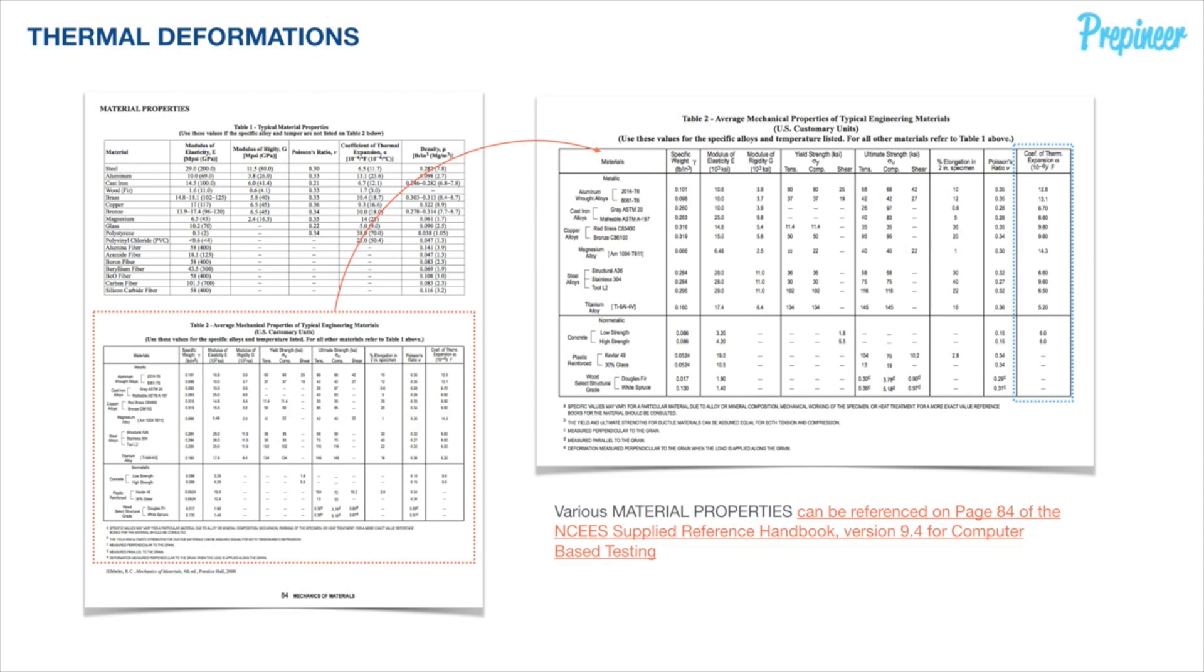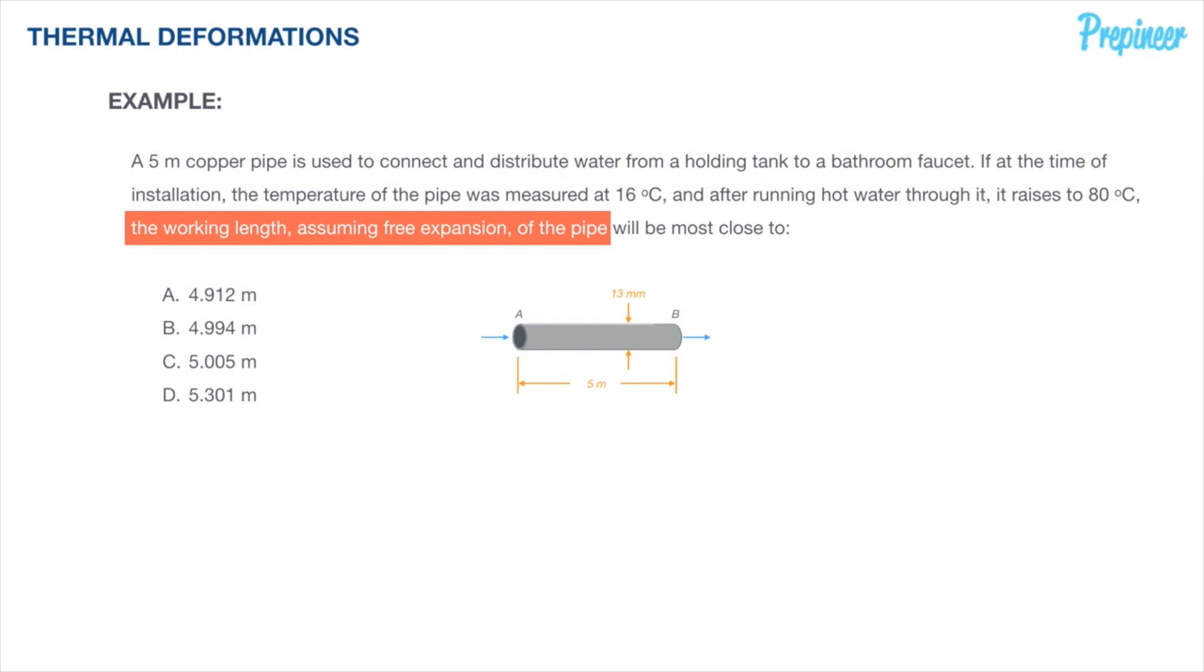Thermal expansion is critical in design and application of engineering designs. If not accounted for properly, it can generate catastrophic internal stresses and ultimately failure. So let's get back into our problem. Recall that we are asked to determine the working length of a pipe that is used to distribute water between a holding tank and a bathroom faucet.